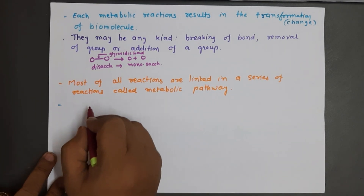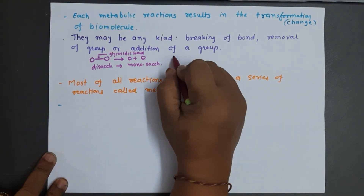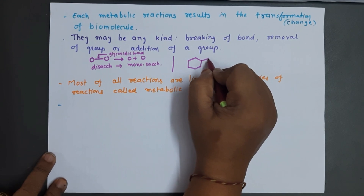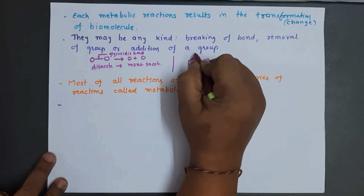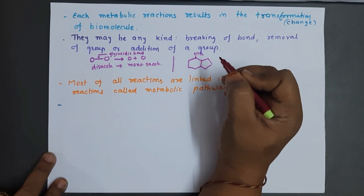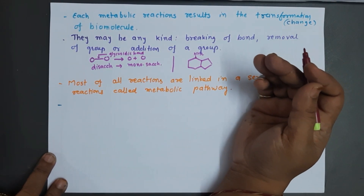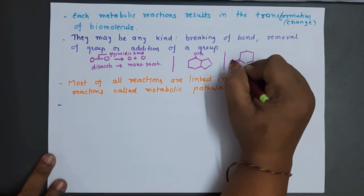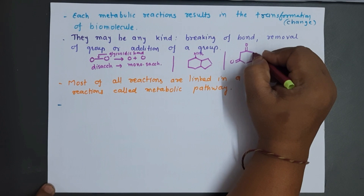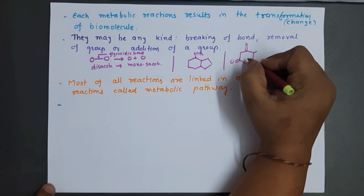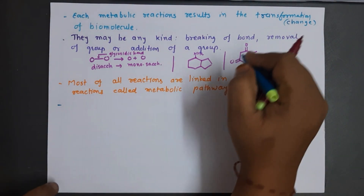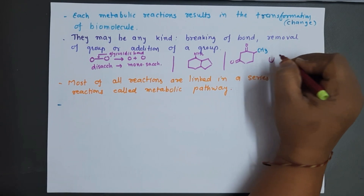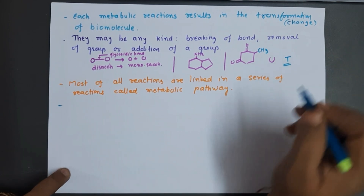Another example: in nitrogen bases, purines and pyrimidines, if we look at uracil — if an amino group is removed, the structure changes (removal of group). And if a CH3 group is added to uracil, the structure changes to thymine. So biochemical reactions can be of any type: breaking of bond, removal of a group, or addition of a group.